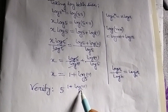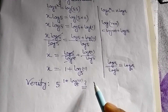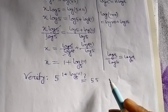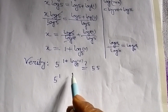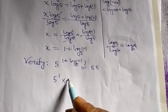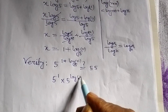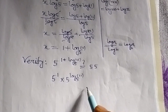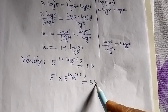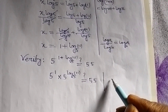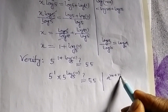Verify: 5 to the power (1 + log₅(11)) should equal 55. Now, 5^(1 + log₅(11)) can be written using the formula a^(m+n) = a^m · a^n, giving 5^1 · 5^(log₅(11)), which equals 5 · 11.